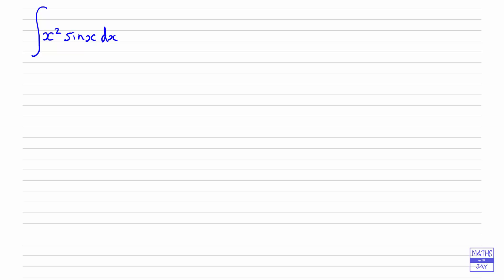So we're going to integrate this by parts. Let's write down the formula. So if we're integrating the product of u and dv/dx, then that's equal to u times v minus the integral of v times du/dx dx.